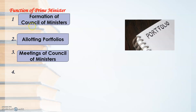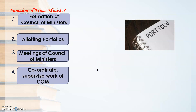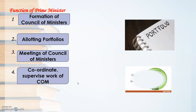Third function is conducting meetings of the Council of Ministers, which are held under the guidance of the Prime Minister. Fourth is to coordinate and supervise the work of Council of Ministers. It is the duty of the Prime Minister to make sure all ministers — Chief Ministers, Health Minister, Education Minister — are doing their work properly, since he appointed them.